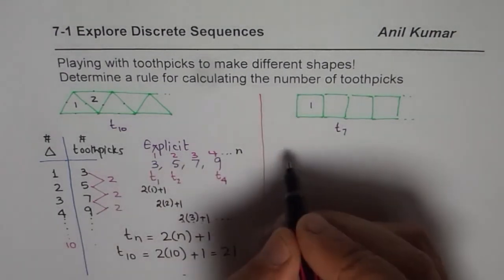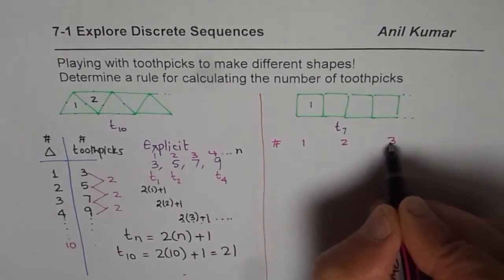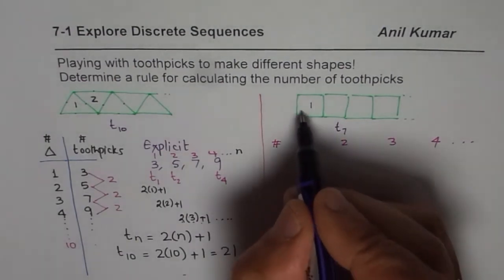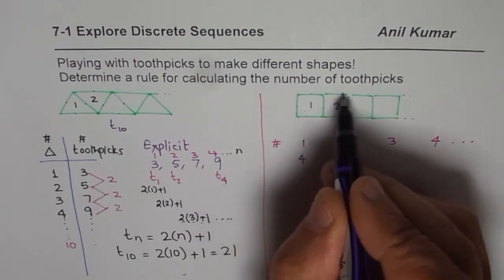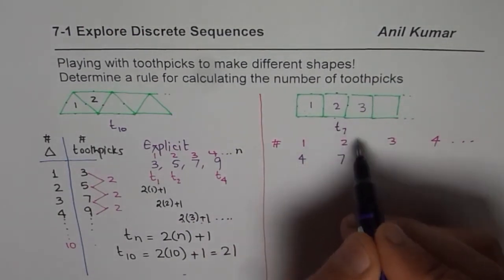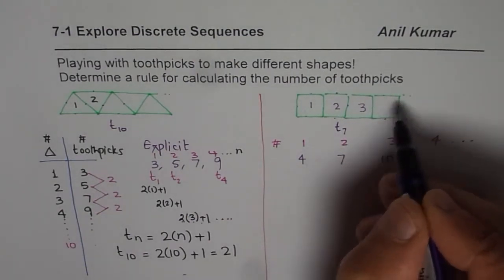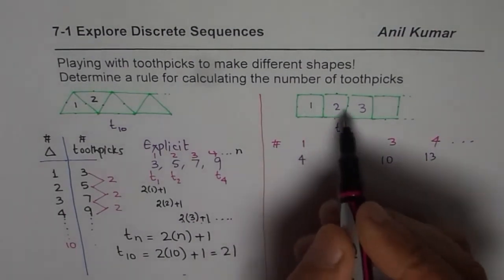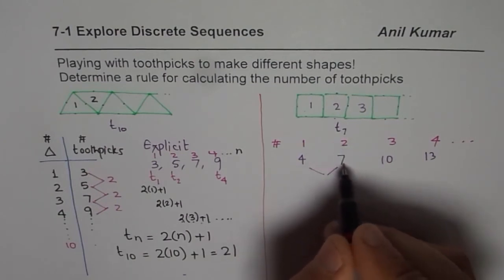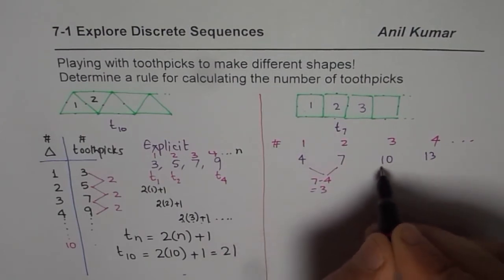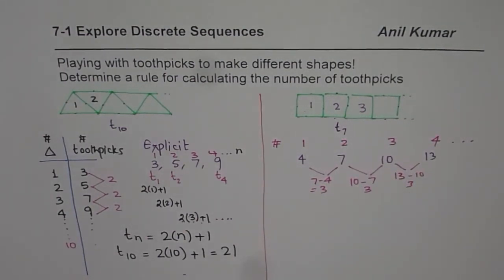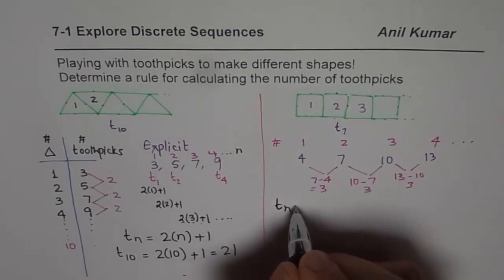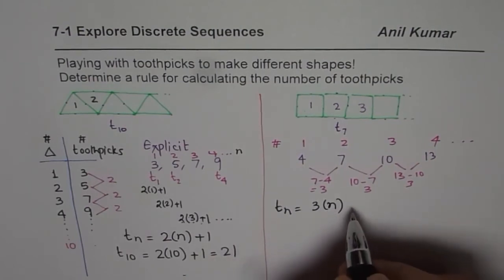Now let us write the numbers for the squares pattern. We write number of squares: one, two, three, four. For one square we have four toothpicks, for two squares five, six, seven — and then three more gives us ten, and then again three more gives thirteen. So the sequence we see is: every time you want to add a square, you need three more toothpicks. Seven minus four is three, ten minus seven is three, and thirteen minus ten is also three. So the number three is very critical to getting our general formula.